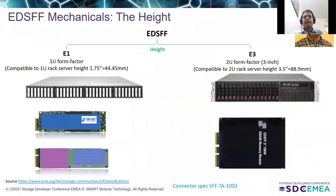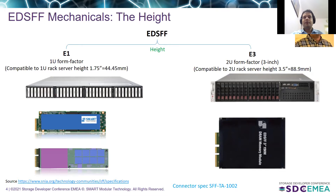Now let's look at the mechanical aspects of the EDSFF form factor. The spec categorizes all devices into two categories based on the height of the module. E1 or 1U devices, which fit 1U rack servers, have a height less than 44.45 millimeters. E3 or 2U devices are designed to fit 2U rack servers, and when vertically mounted, users can connect 16 such devices in a single server, increasing device density and lowering total cost of ownership.